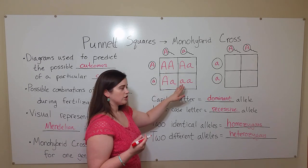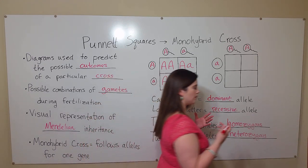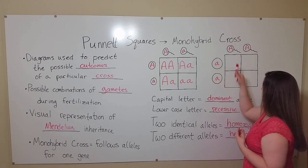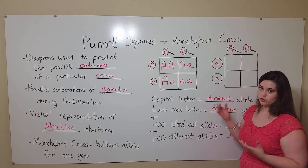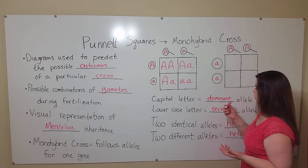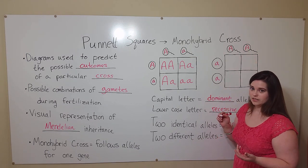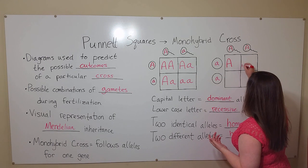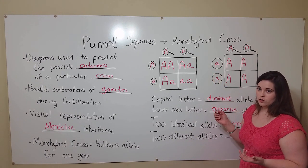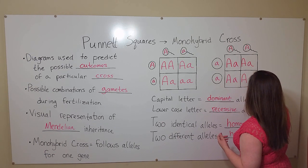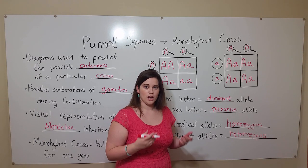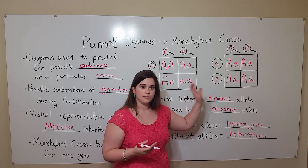These proportions change based on the alleles that the parents have. For example, if we have a mother with two recessive alleles and a father with two dominant alleles — both parents homozygous — because the father only has dominant alleles to give away, every offspring would get a dominant allele from the father. Because the mother only has recessive alleles to give away, every offspring would get a recessive allele from the mother. So with this monohybrid cross, there is a 100% chance that all of their offspring would be heterozygous for this particular gene.